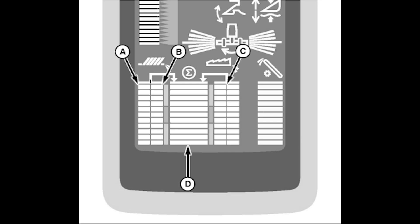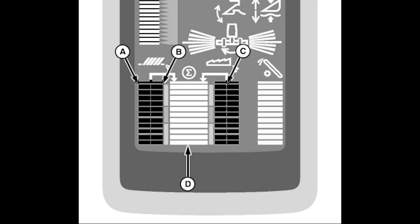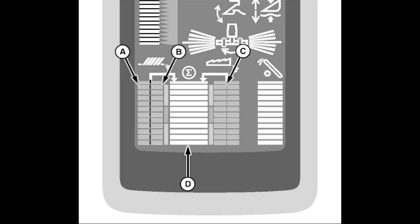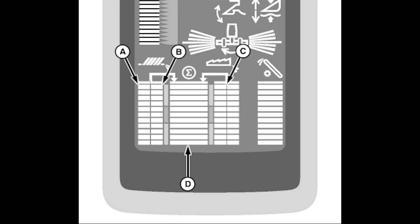The four narrow bar graph indicators on the primary display unit show the activity of the loss sensors. The graphs on the left of the display are for the shoe sensors. There is one bar graph for each sensor. The right graphs are for the separator sensors.